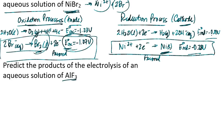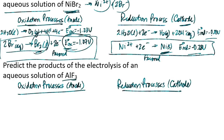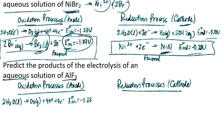Take for example the electrolysis of aluminum fluoride. I'm going to consider the possible oxidation processes at the anode as well as the reduction processes at the cathode. Since I'm using an aqueous solution, it's possible the oxidation of water could occur. Copying that from the previous problem, the standard oxidation potential is −1.23 volts.